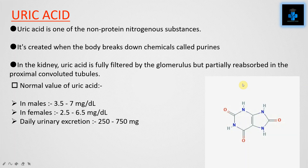Next is uric acid. Uric acid is one of the non-protein nitrogenous substances. It is created when the body breaks down chemicals called purines. In the kidney, uric acid is fully filtered by the glomerulus but partially reabsorbed in the proximal convoluted tubules. The normal value of uric acid in males is 3.5 to 7 mg per dL; in females it ranges from 2.5 to 6.5 mg per dL. The daily urinary excretion of uric acid is 250 to 750 milligrams.